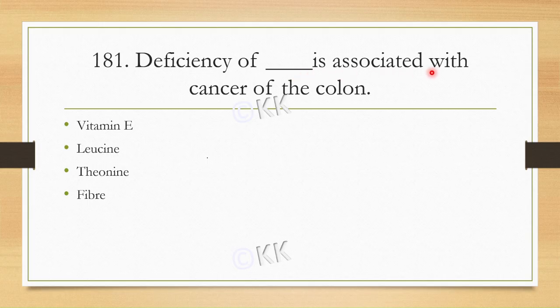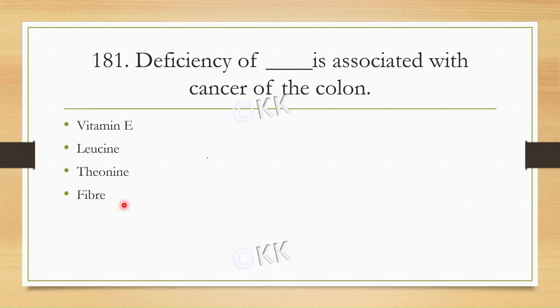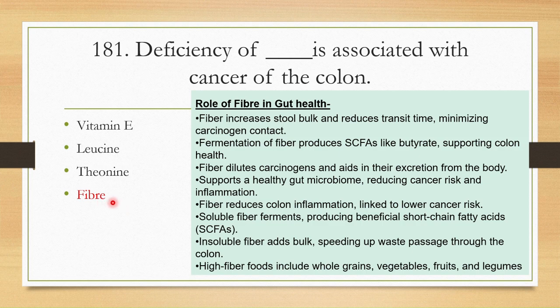Deficiency of which is associated with cancer of colon? Option A: Vitamin E. Option B: Leucine. Option C: Tyranine. Option D: Fiber. This is a related question we have discussed earlier. Our fiber is called colon cancer. The correct answer is fiber.